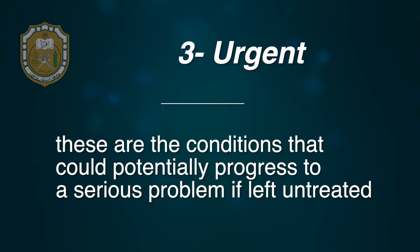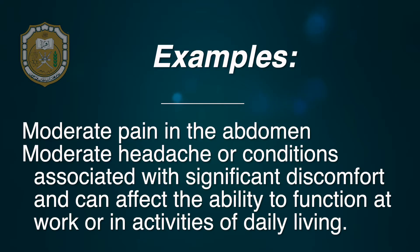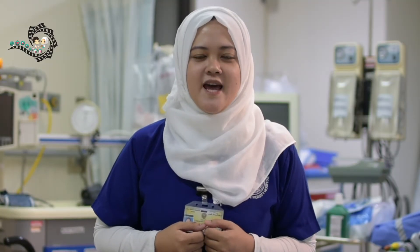Category 3 is the urgent level. These are conditions that could potentially progress to a serious problem if left untreated, such as mild respiratory distress, non-symptomatic hypertension, mild dehydration due to uncontrolled vomiting or diarrhea, moderate pain in the abdomen, moderate headache, or conditions associated with significant discomfort that can affect the ability to function at work or in activities of daily living. These patients can be directed to the waiting room and should be regularly reassessed for any deterioration.